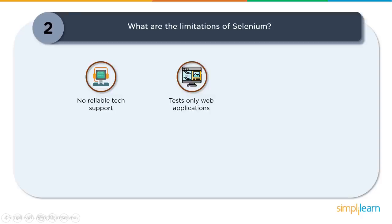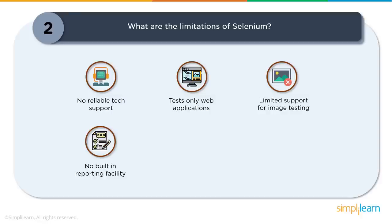Second limitation: Selenium can test only web applications. It cannot handle Windows GUI or non-HTML pop-ups. The workaround is to integrate tools like AutoIt for handling Windows-based activity. Selenium also cannot automate mobile applications, but it can integrate with Appium, a mobile automation tool. Third limitation: limited support for image testing. Selenium's standard API allows interacting only with the browser, making image-based testing difficult. Sikuli is a good tool for image testing that can be integrated with Selenium.